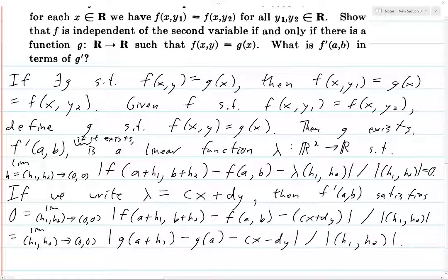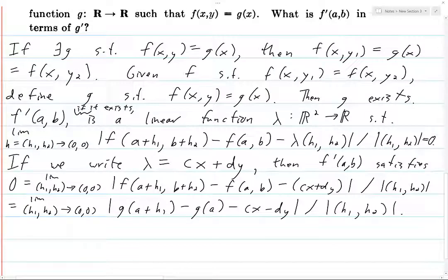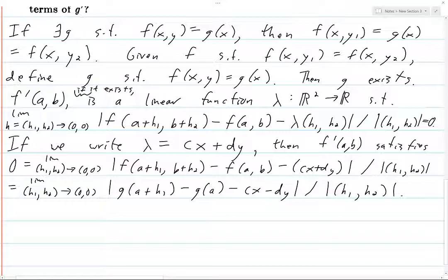Okay, so f prime, if it exists, because we're trying to prove, or, what is f prime in terms of g prime? So this is supposing that it does exist, this is what it looks like, because it need not exist. If we write lambda, now lambda is a linear function from r2 to r. So let's say that x is the first variable, y is the second variable, then we can write lambda as c times x plus d times y.